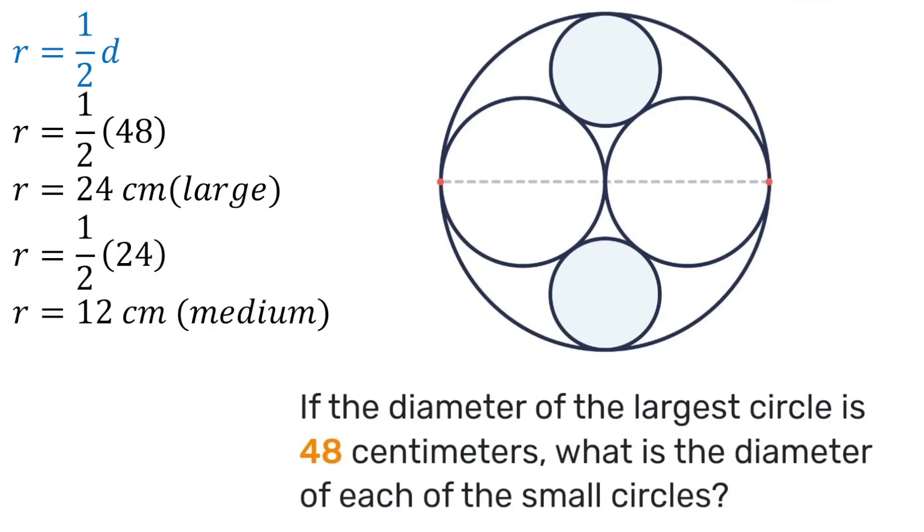Then let's make some construction lines and input some of those values that we know. So that is the radius of the medium circle which is going to be 12. That is also a radius so that's also going to be 12. That's the radius of the large circle so that's going to be 24.